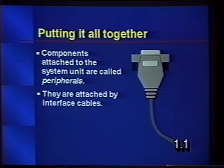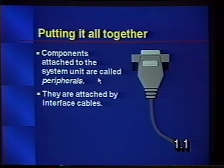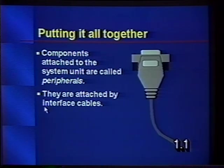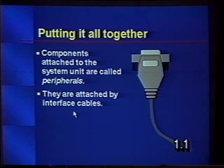How is it all put together? The different components attached to the system unit are called peripherals. They're connected by cables that interface the various components to the system unit. Everything comes and goes through the system unit.